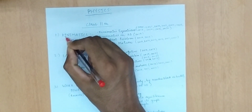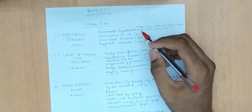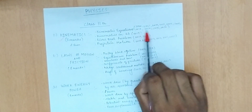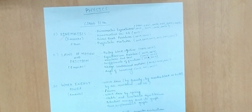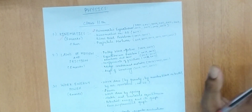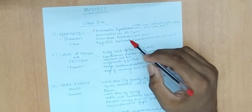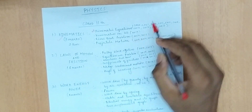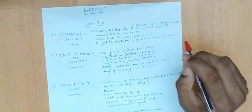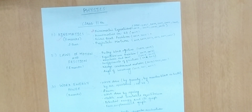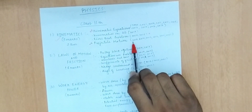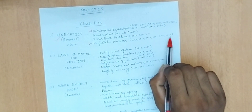We are going to learn kinematics. The important topics include kinematic equations. The most asked questions are in this topic. Kinematics 2D is from 2017. We are going to learn river boat problems from 2019 and 2015. Projectile motion is again one of the most important topics, asked in 2019, 2014, 2013, 2012, 2011, and 2021.